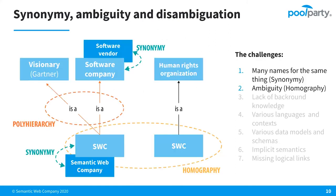Let's take a look at the second challenge, which is about ambiguity. Ambiguous terms like SWC can mean not only the Semantic Web Company in the context of software, but it can also mean the Simon Wiesenthal Center in Los Angeles, which is a human rights organization. As a human, you will figure out quickly which is the software company and which is the NGO. As a machine, you need context to understand that. If you want to extract it precisely and understand what the text is about, what SWC really means, you need context — and that's provided by the knowledge graph. Knowledge graphs are important for highly precise text mining.